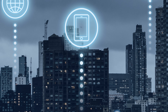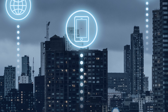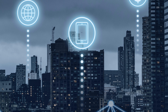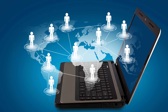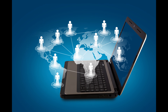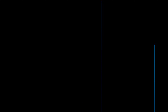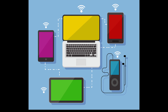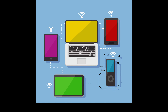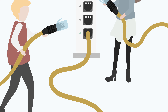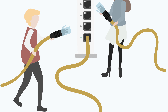The internet is a network of networks where many smaller networks are connected, built to share data, information, and resources. It is accessible through devices like smartphones, computers, and smart TVs, and we can use connections like Wi-Fi, mobile data, or wired cable like Ethernet cable.